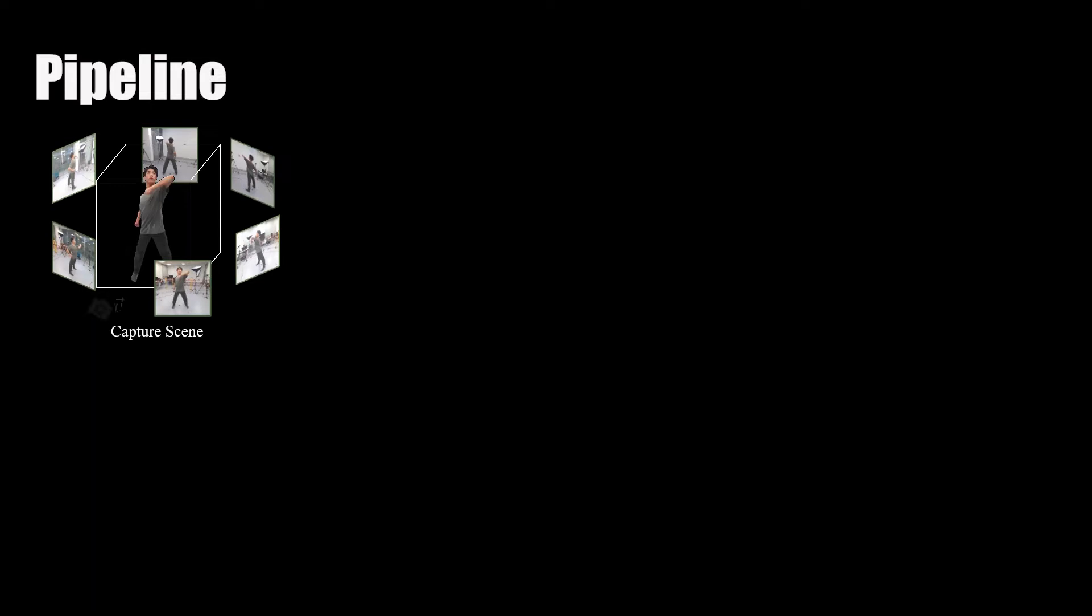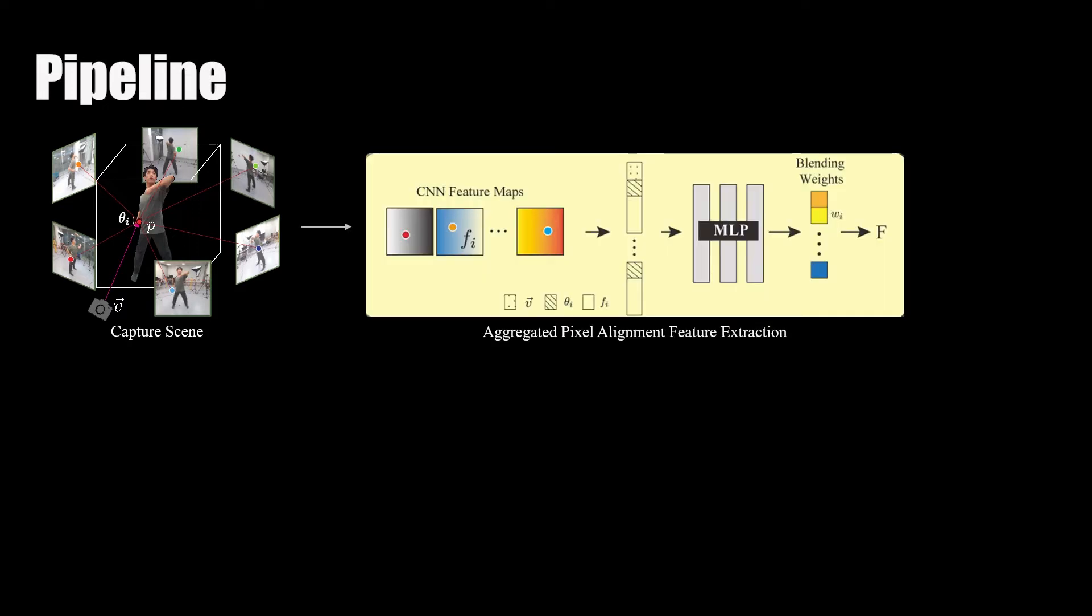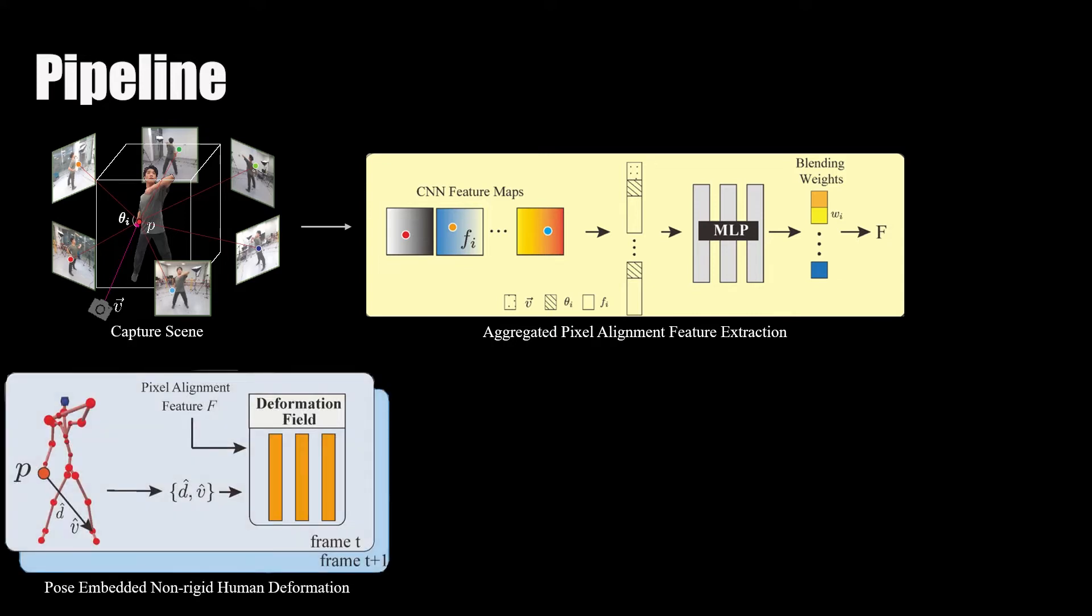Specifically, we first back-project the sample point to each view, querying corresponding CNN feature maps, then concatenate the feature maps, angle, and view direction to a feature blending network for aggregated feature F for generalizability.